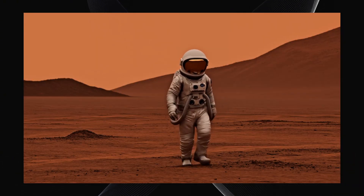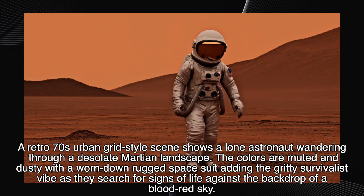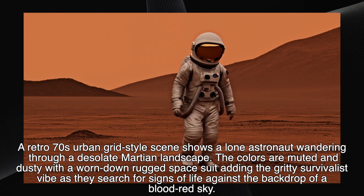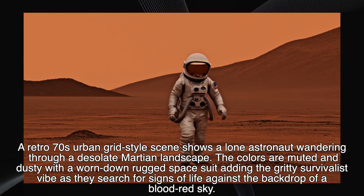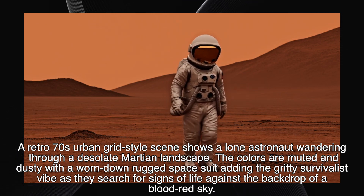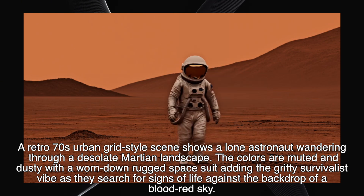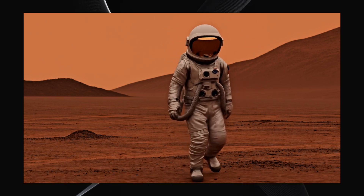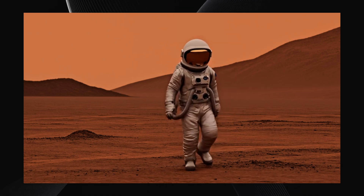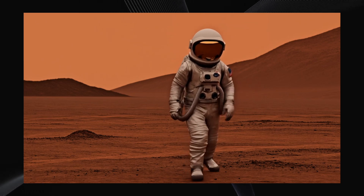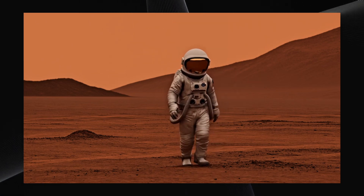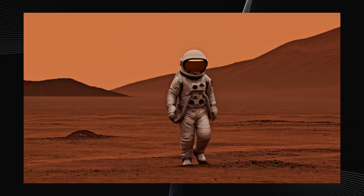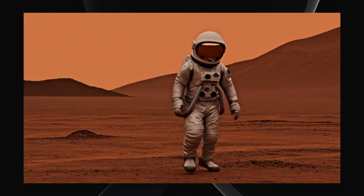Then there's a more atmospheric and stylistic prompt: a retro 70s urban grid-style scene shows a lone astronaut wandering through a desolate Martian landscape. The colors are muted and dusty, with a worn-down rugged spacesuit adding the gritty survivalist vibe as they search for signs of life against the backdrop of a blood-red sky. The video generated from this is spot-on. It successfully captures that specific retro, gritty aesthetic, nails the muted color palette, depicts the desolate Martian environment, and the astronaut's look fits the description perfectly.